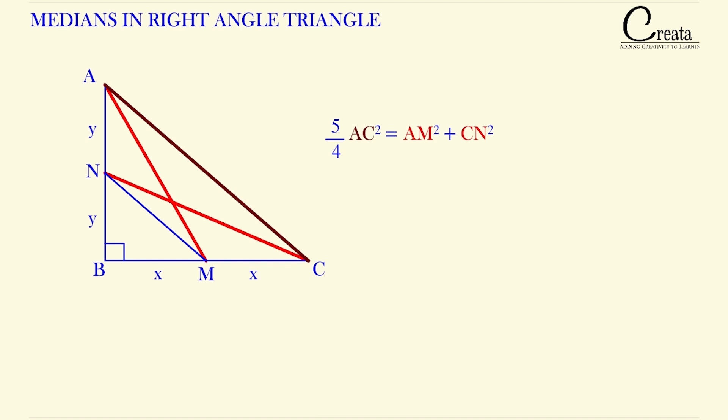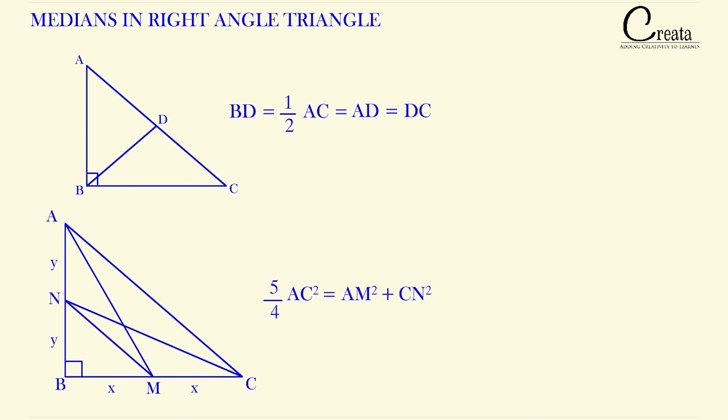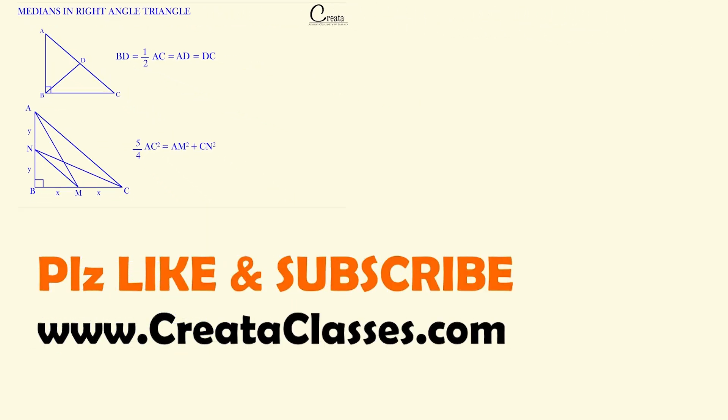Okay, we have done two properties of medians with respect to a right angle triangle. The first one is that in a right angle triangle, median to hypotenuse is equal to half the hypotenuse. And secondly, we have done this relation that is AM square plus CN square is equal to 5 by 4 AC square. These two properties or relations are only applicable for a right angle triangle. This is very important. Sometimes students get confused and apply this relation in some other type of triangles also. So note it down. So that's it for this lecture. Thank you very much for being with Kreata Classes.